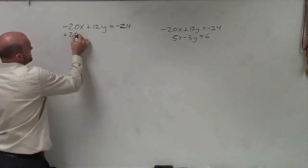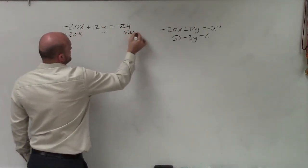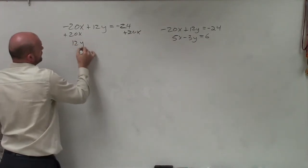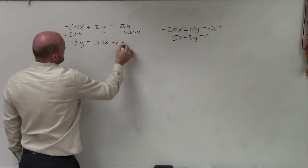So first thing I'll do is I need to isolate the y, so I'll add a 20x to both sides. Therefore, I have 12y equals 20x minus 24.